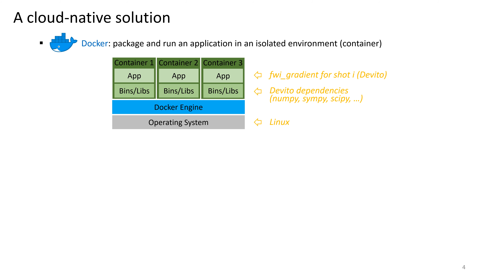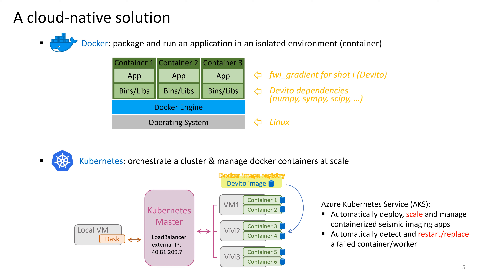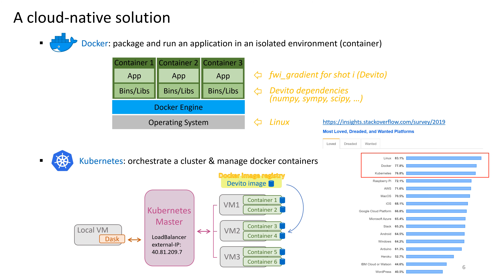Now we have Docker containers, the next step is to run them at scale. There are multiple choices, and we pick Kubernetes. It orchestrates a cluster using hundreds or thousands of VMs and manages Docker containers at scale, such as pulling the Docker image from the registry and loading it in containers. Kubernetes, or AKS, offers auto-scaling and auto-detection and replacement of a failed container or worker, which is typically not available in the traditional MPI-based approach. A survey from Stack Overflow shows that Linux, Docker, and Kubernetes are the most loved and wanted platforms.